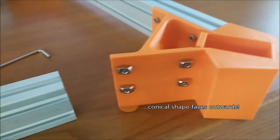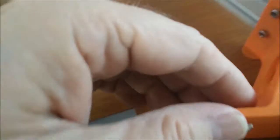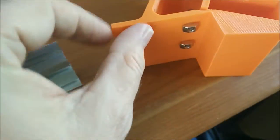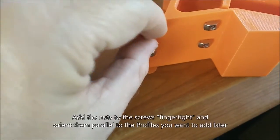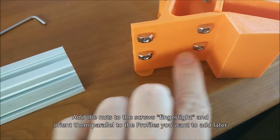So what you basically do first, you insert the screw from this side and you add the nut so that it's not super tight, we call it finger tight, and you orient them in a horizontal position.